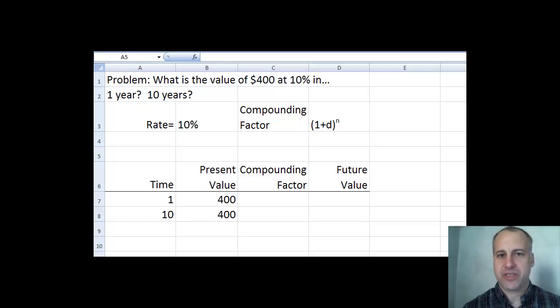So the basic formula, we've set this up here with a few columns in an Excel spreadsheet. The compounding factor, which we looked at on the previous slide, is 1 plus d raised to the n, and we're going to multiply that times our present value, plugging in our discount rate or interest rate and plugging in the number of periods n. This is easy to do with a simple formula in Excel.